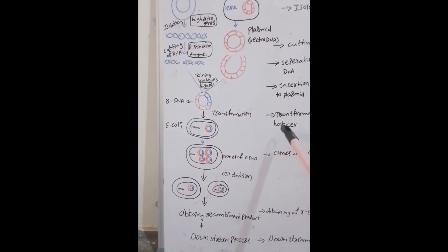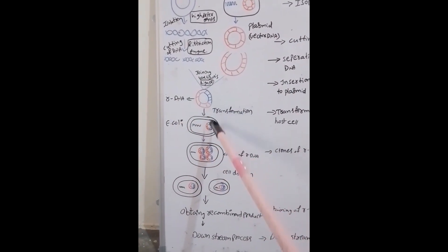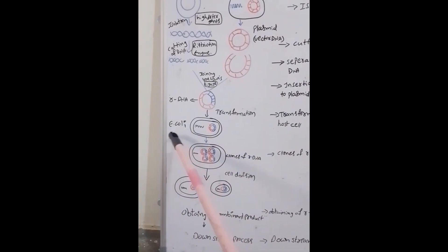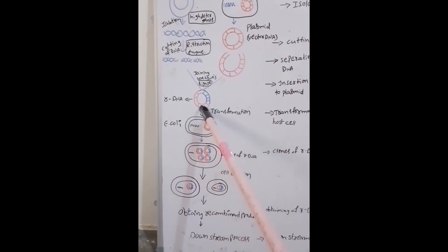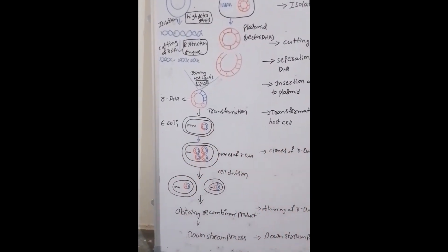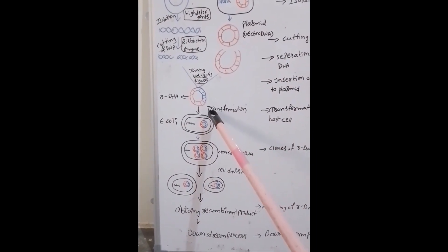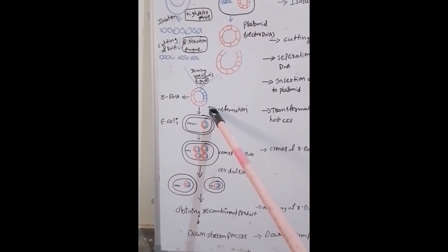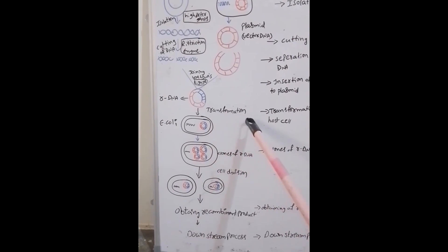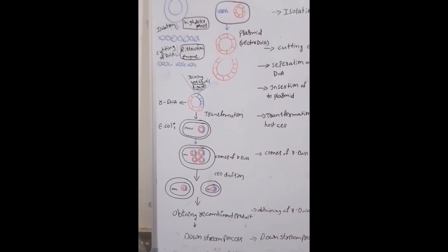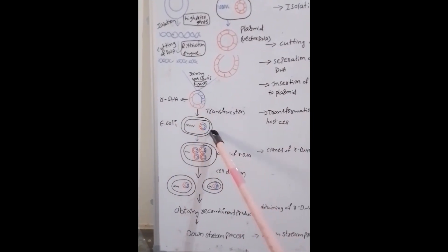The next step is transformation into the host cell. The rDNA is transferred into the host cell — here, the host cell is E. coli. This transformation is of four types, but mainly two methods are used: transformation and microinjection.